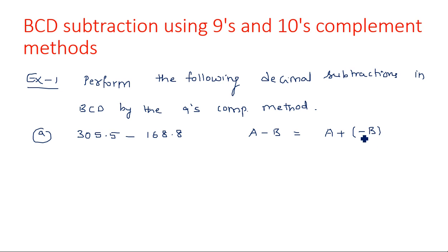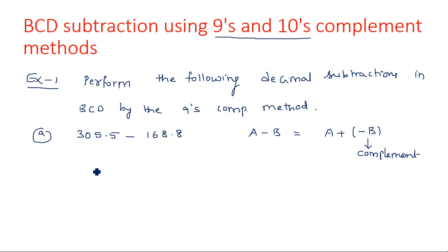The complement may be nines complement, tens complement, ones complement, or twos complement. Here we are studying nines complement. This negative number can be converted into a positive number by taking either nines or tens complement. Since the question asks for nines complement, we perform nines complement on minus B so it becomes plus B. The 9s complement of any number is 9 minus that number.